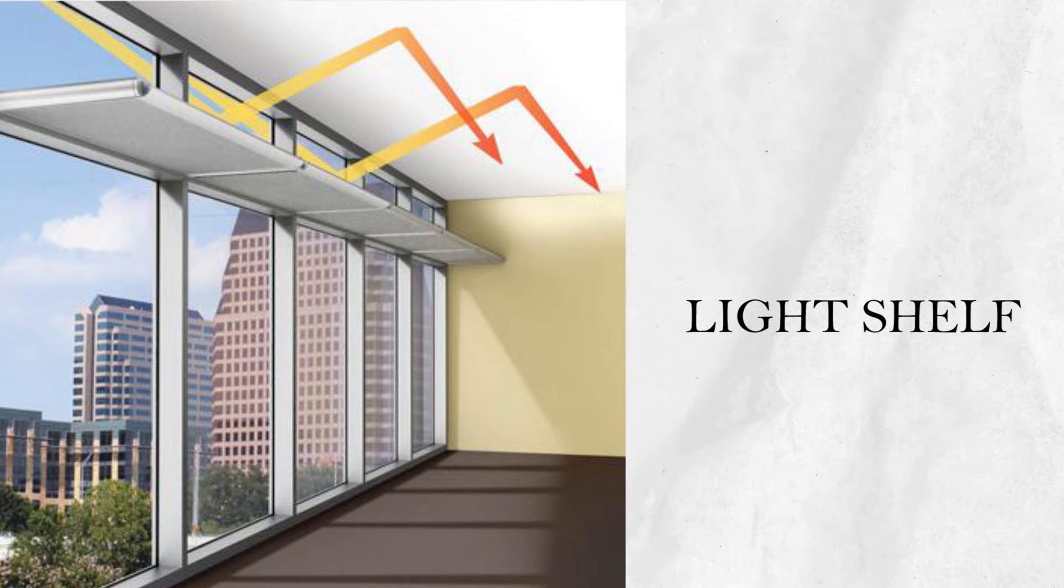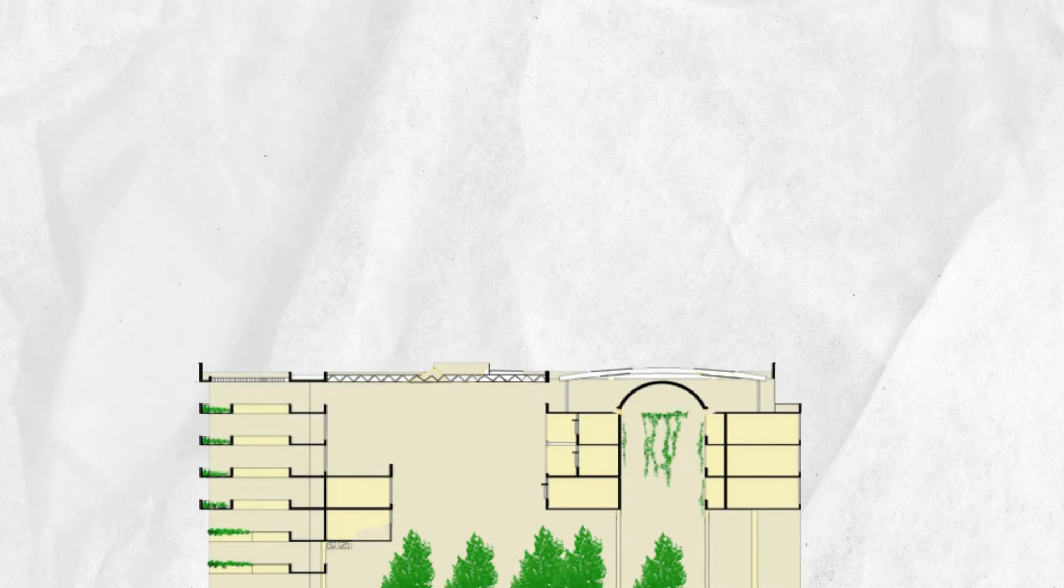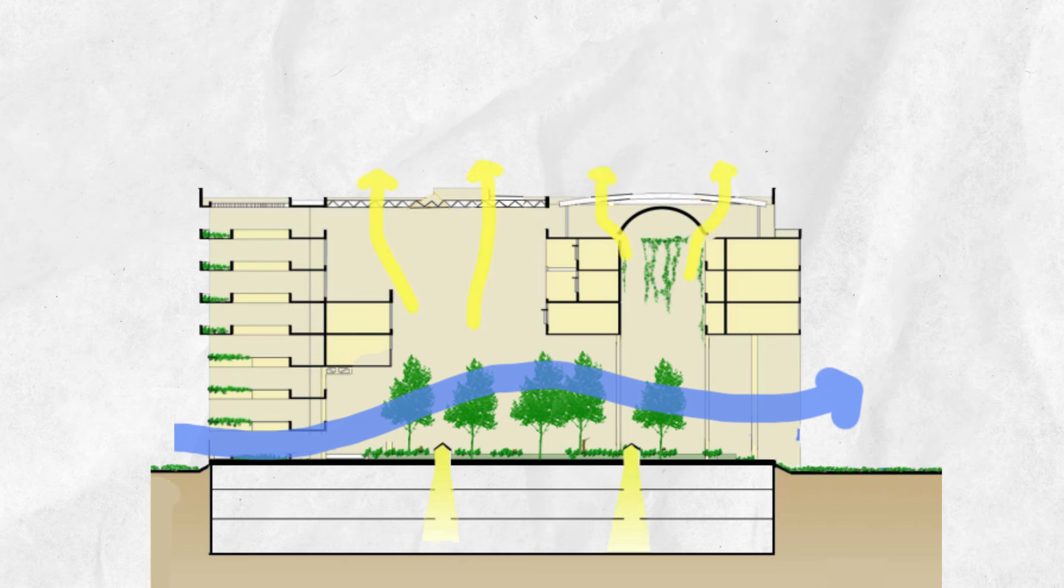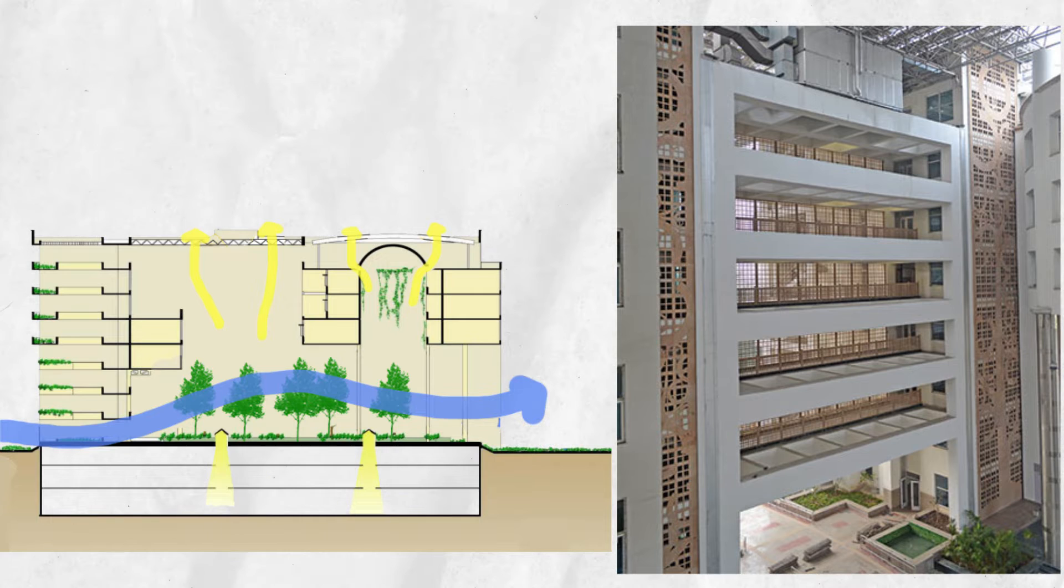Natural ventilation: The courtyard in the center of the building helps in air movement, as natural ventilation happens due to the stack effect. Corridors have openable windows and permeable facades which allow air to enter into the building, which adds cross ventilation.